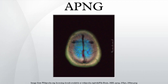The Animated Portable Network Graphics file format is an extension to the Portable Network Graphics specification. It allows for animated PNG files that work similarly to animated GIF files, while supporting 24-bit images and 8-bit transparency not available for GIFs. It also retains backward compatibility with non-animated PNG files. The first frame of an APNG file is stored as a normal PNG stream, so most standard PNG decoders are able to display the first frame of an APNG file.